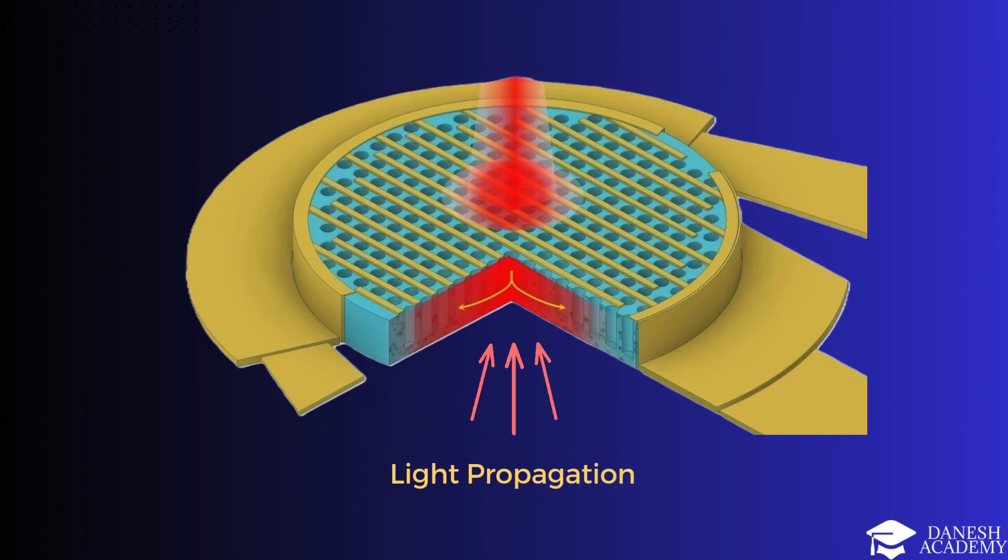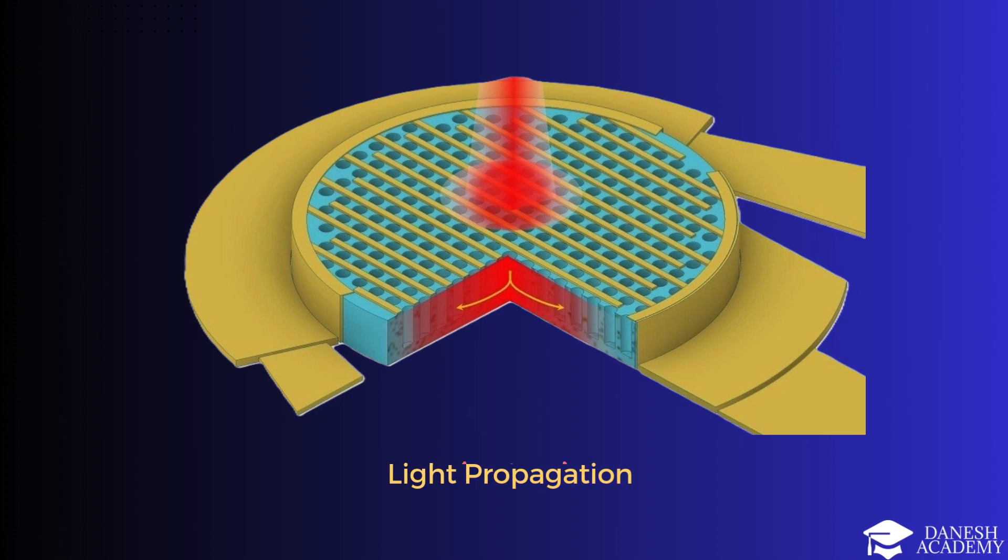After photons enter the solar cell, advanced designs guide and trap the light to maximize its interaction with the semiconductor. Textured surfaces and reflective back layers ensure photons bounce within the cell, increasing the chances of absorption. This process enhances the cell's efficiency by ensuring minimal light escapes and prepares the absorbed energy for electron release in the next stage.